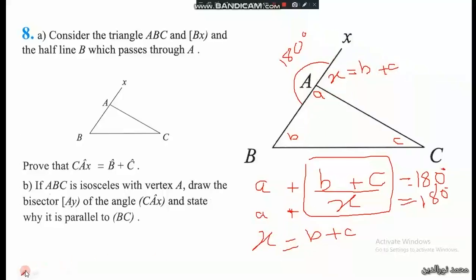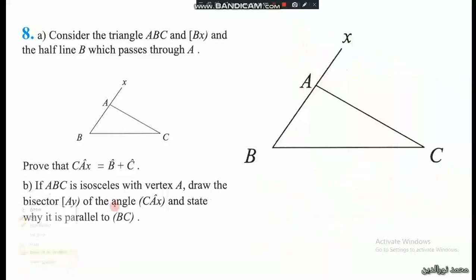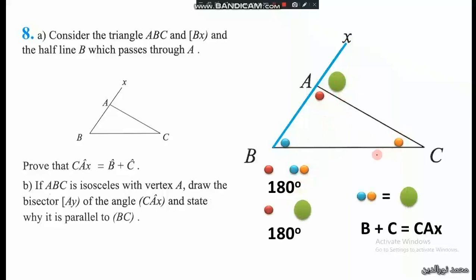Now if you want, I'll show you with colors. We have one, two, three—they are equal. So I put a green dot here. The red one with the green dot also equals 180. So this angle equals the blue plus the orange one. Therefore angle B plus angle C equals angle CAX.